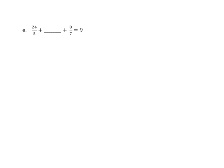If we look at this problem, it's a problem with a missing addend. Since we're adding, we can also easily change the order. The first thing I notice is that these are improper fractions, so I'm going to change them to mixed numbers. I see that I have 24 5ths, which would be 4 and 4 5ths, plus blank plus 1 and 1 7th equals 9. I can change the order now, so I'm going to have 4 and 4 5ths plus 1 and 1 7th plus something equals 9.